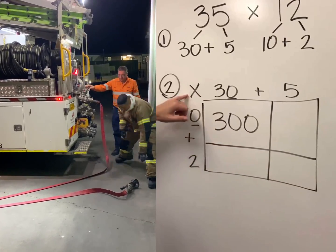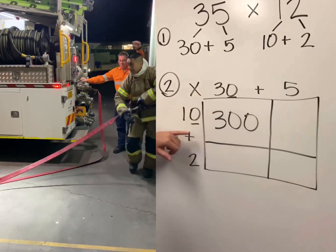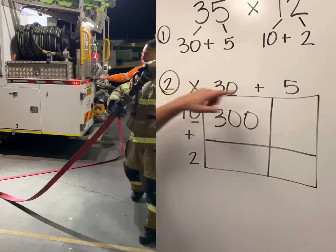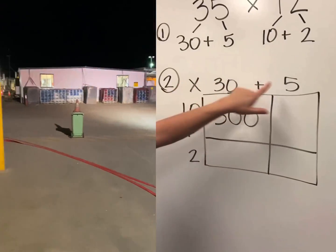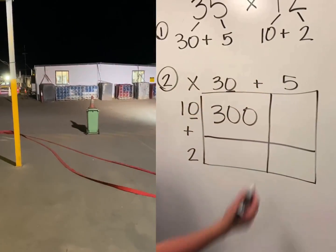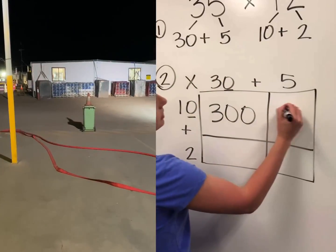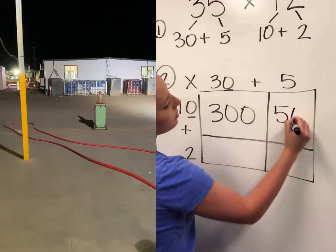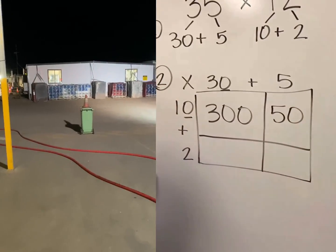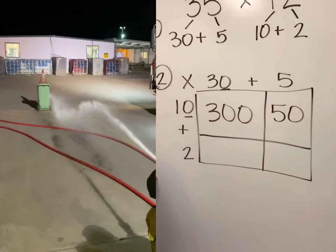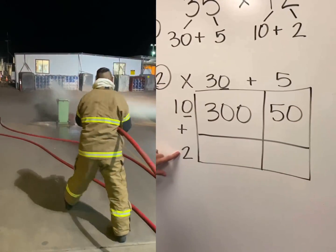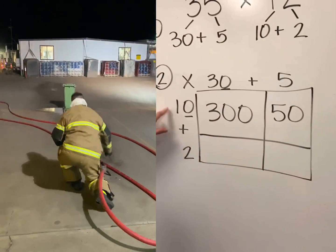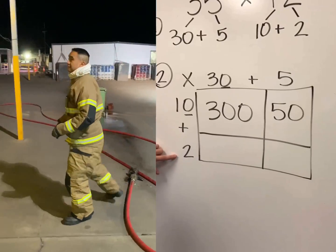We did 10 times this, 10 times that. 10 times 5 is 50, so it goes in the first box. Then we move down to the 2 because we're done with the 10.